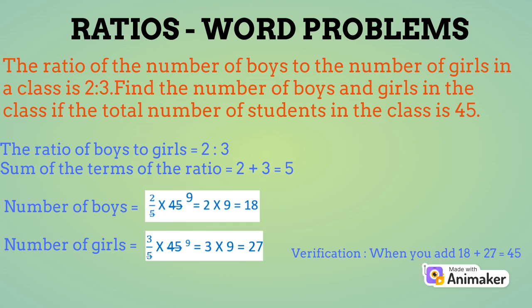First, let us find out the number of boys in the class. Number of boys will be 2 by 5 into 45. 2 is the ratio of the boys, 5 is the total ratio of boys and girls in the class into total strength of the class. Upon simplification, you will get 18 as the answer.